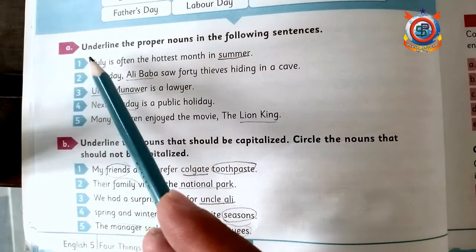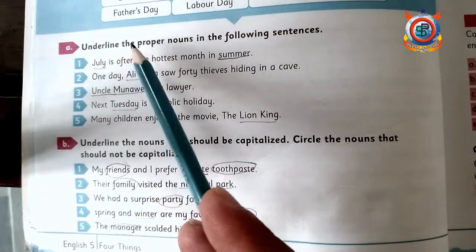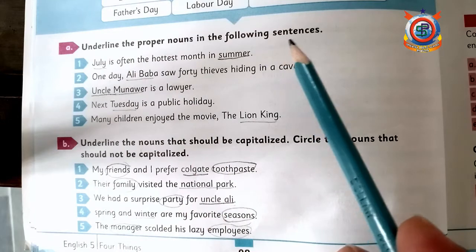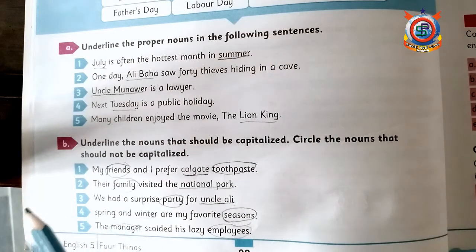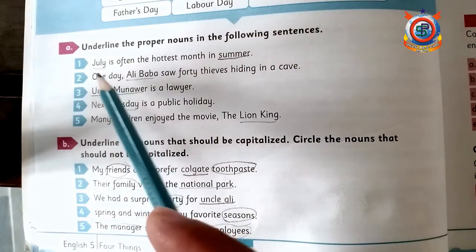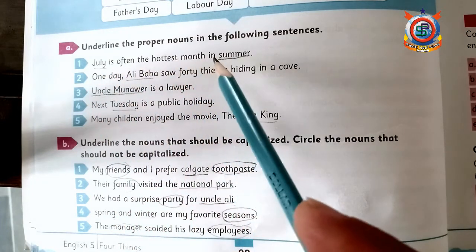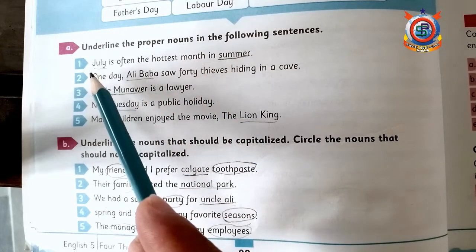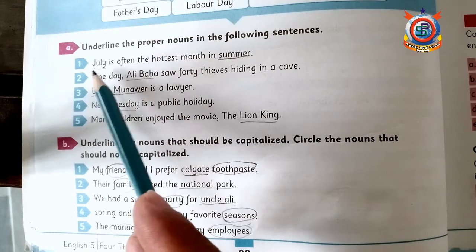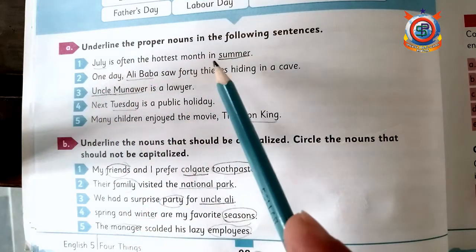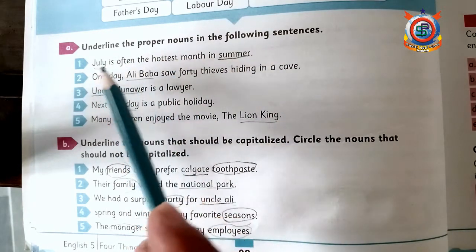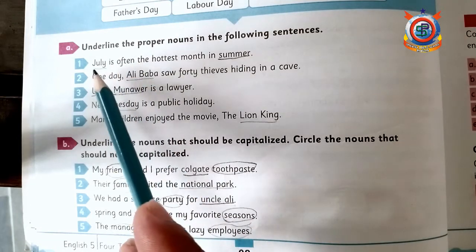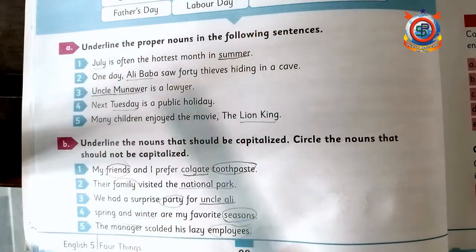Question number A: Underline the proper nouns in the following sentences. First sentence: 'July is often the hottest month in summer.' Here there are two proper nouns — one is July and one is Summer. So July is a proper noun and Summer is a proper noun.